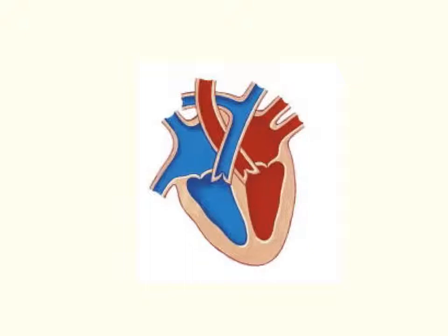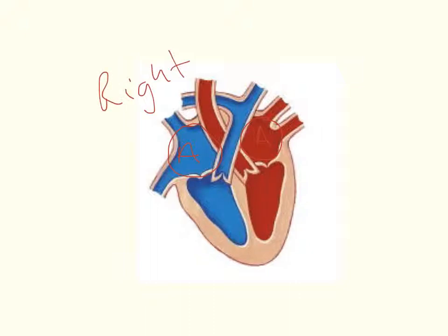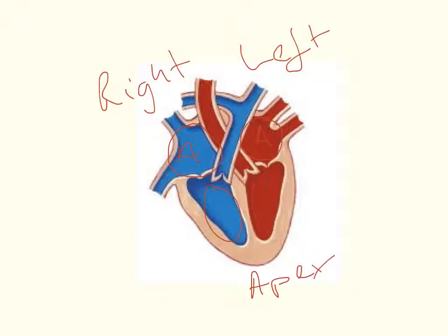The atria are at the top of the heart. Remember when you're labelling the heart you're looking at a patient's heart, so it's going to be the opposite way around — this side is the right side and the other side is the left side. At the bottom of the heart you have the apex and the two ventricles, the right ventricle and the left ventricle.